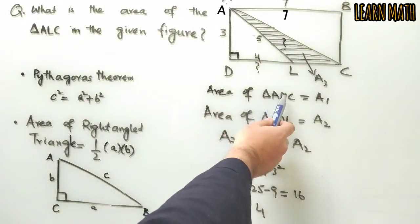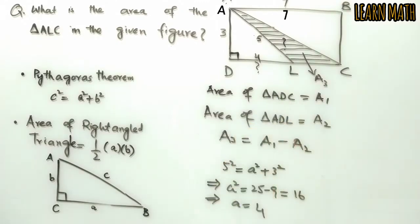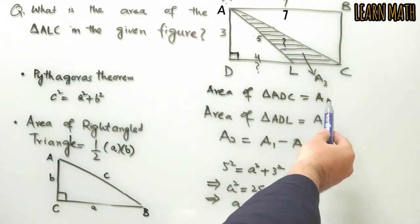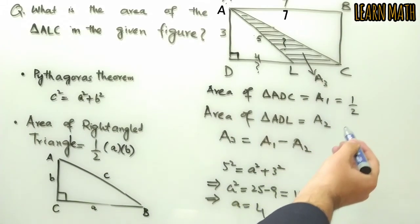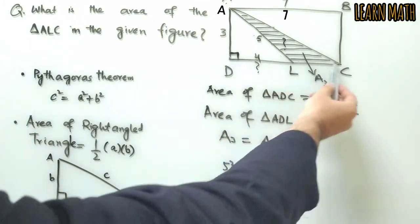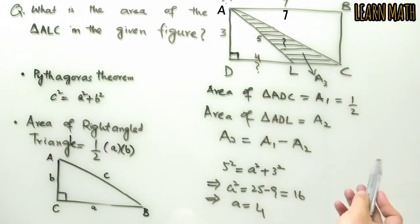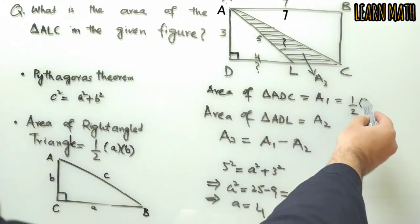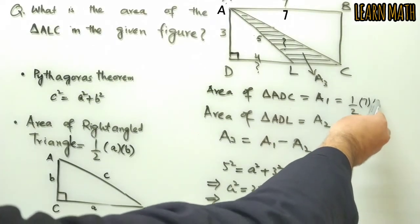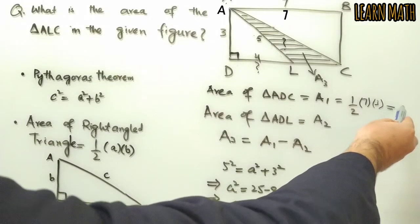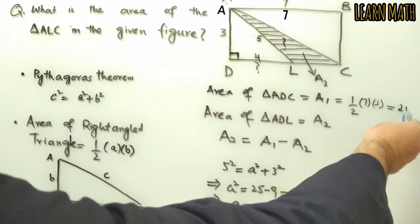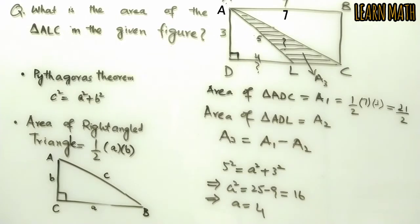Now, what will be the area of triangle ADC? The area of triangle ADC will be 1/2 of 7 multiplied by 3, and this will be equal to 21/2, which equals 10.5.